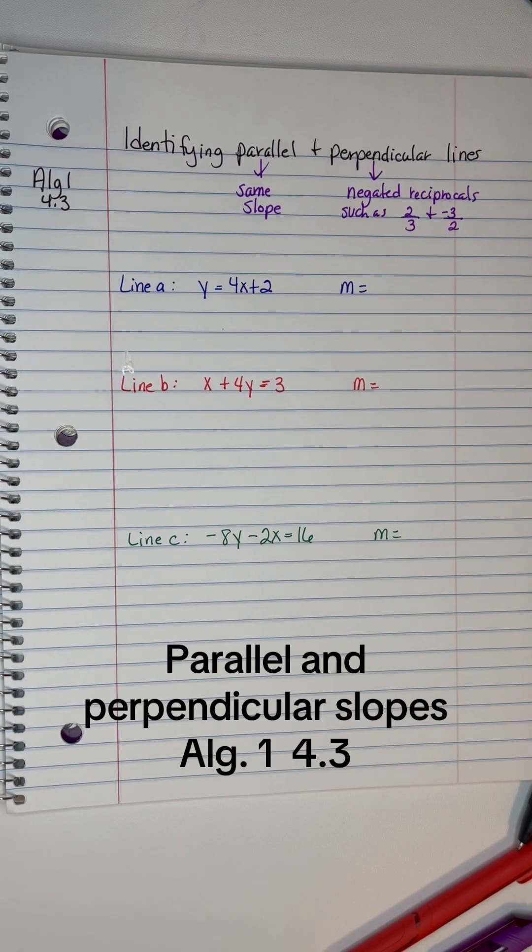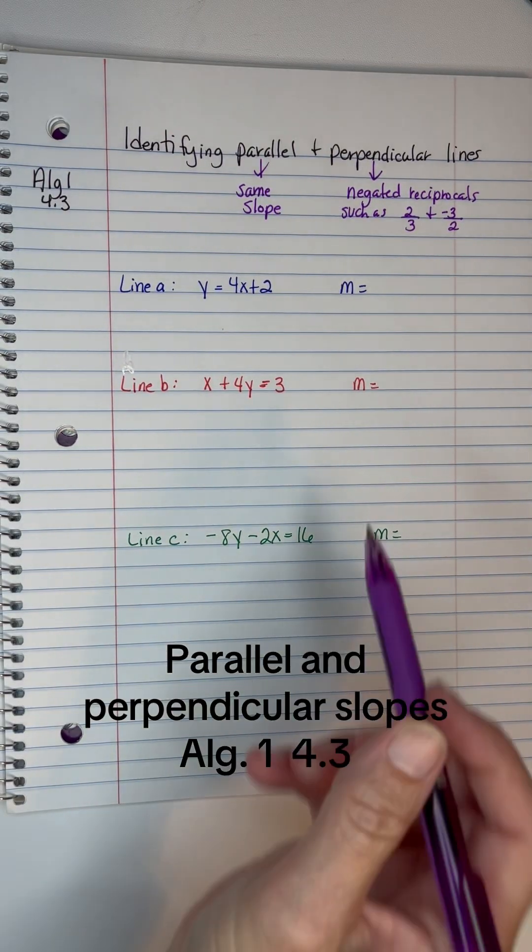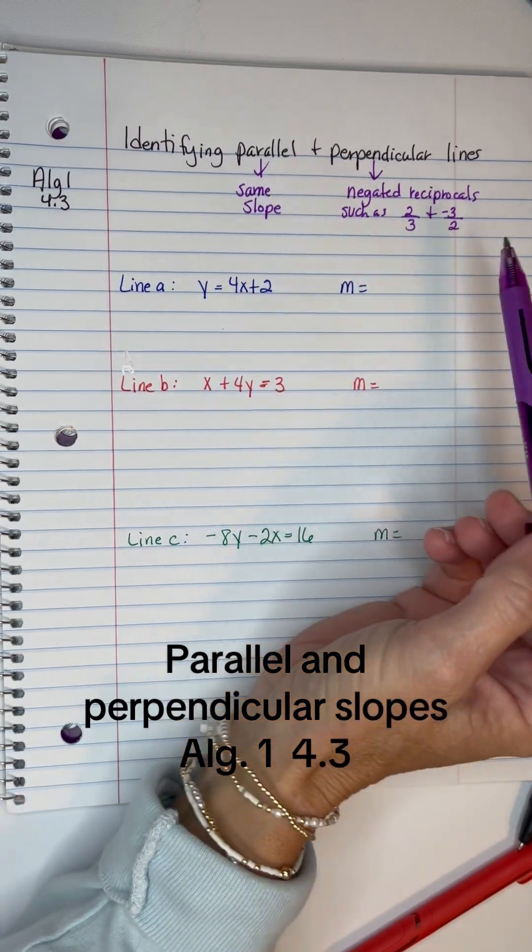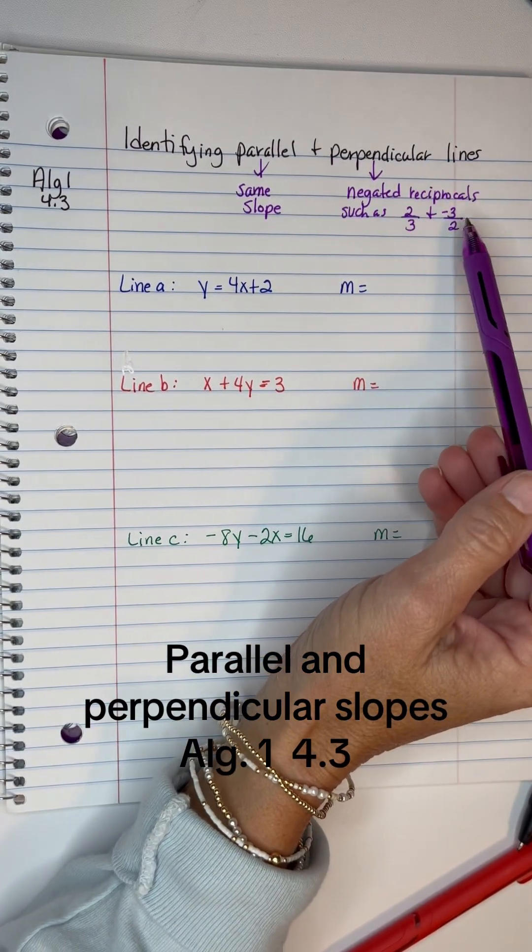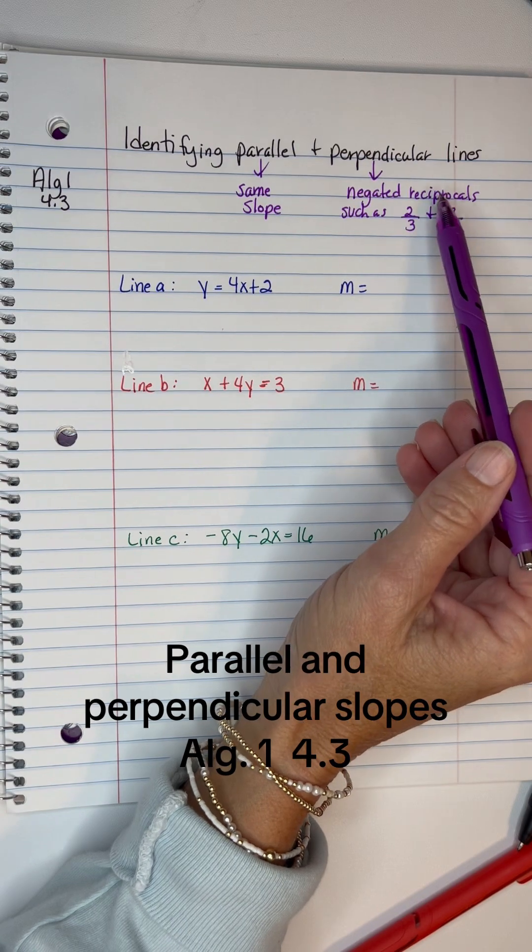We're going to identify parallel and perpendicular lines. Keep in mind that parallel lines have the same slope and perpendicular lines have slopes that multiply to give you negative 1, or negated reciprocals.